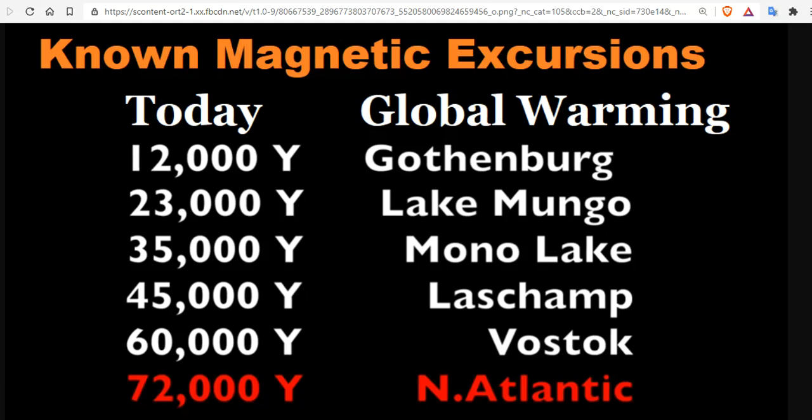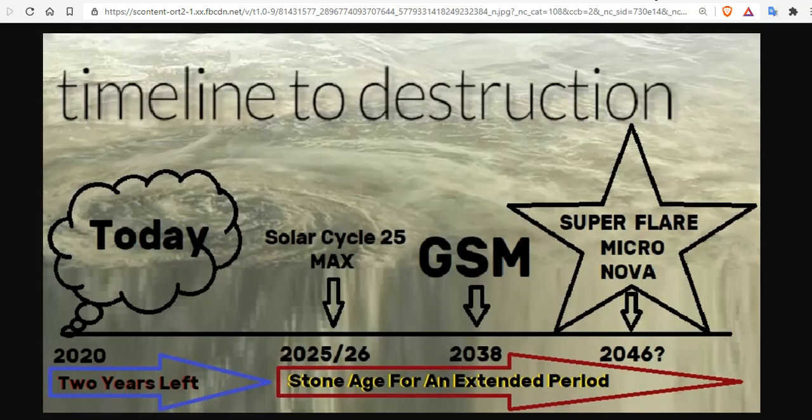Now we know about magnetic excursions. The Le Champ, they called the largest in the last, let's say 100,000 years. But they happen regular and periodic. So that's a big heads up. Here's our timeline to destruction. And what we mean by that, we don't mean destruction of the planet. We mean destruction of the empire. The way we live. The control mechanism of governments.